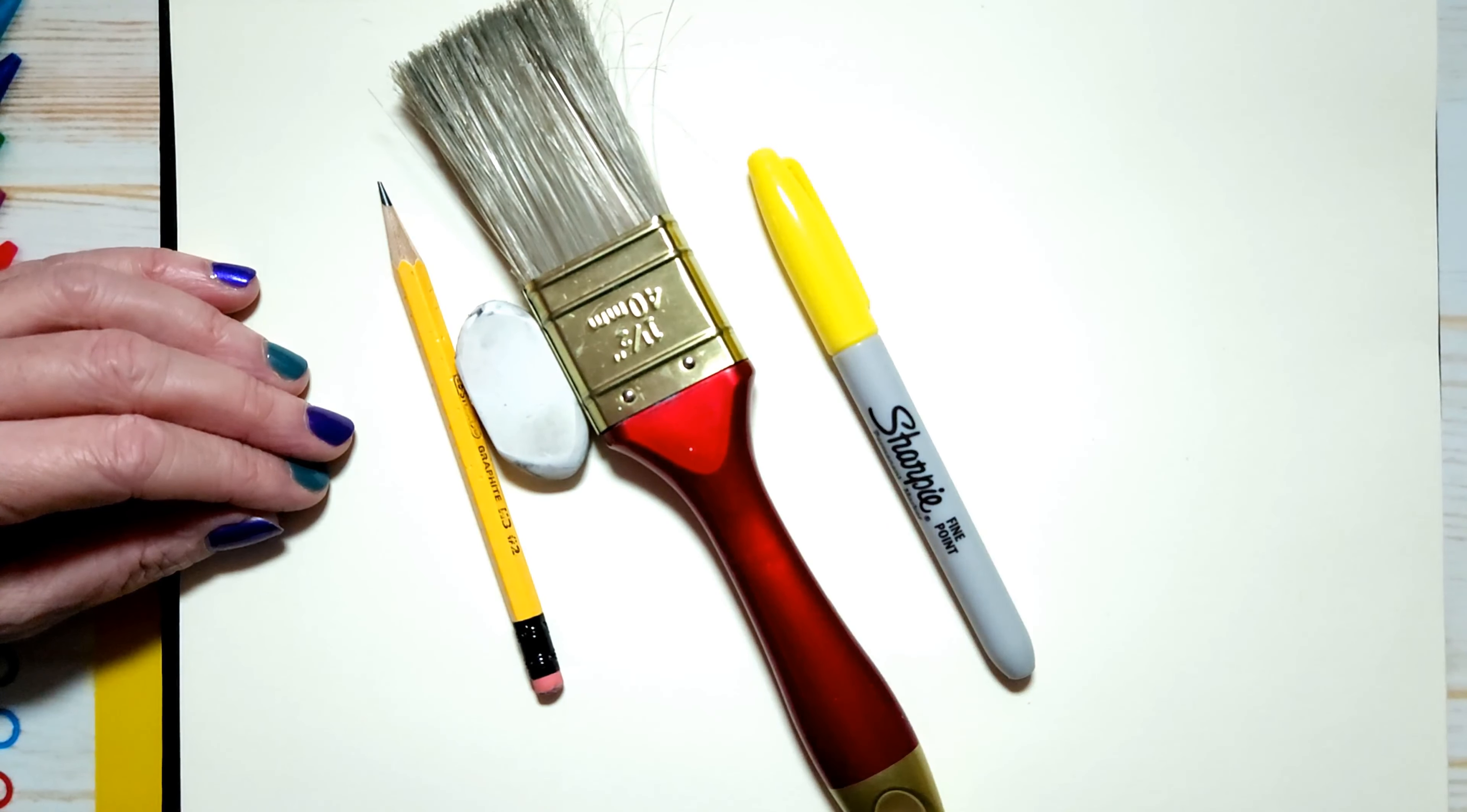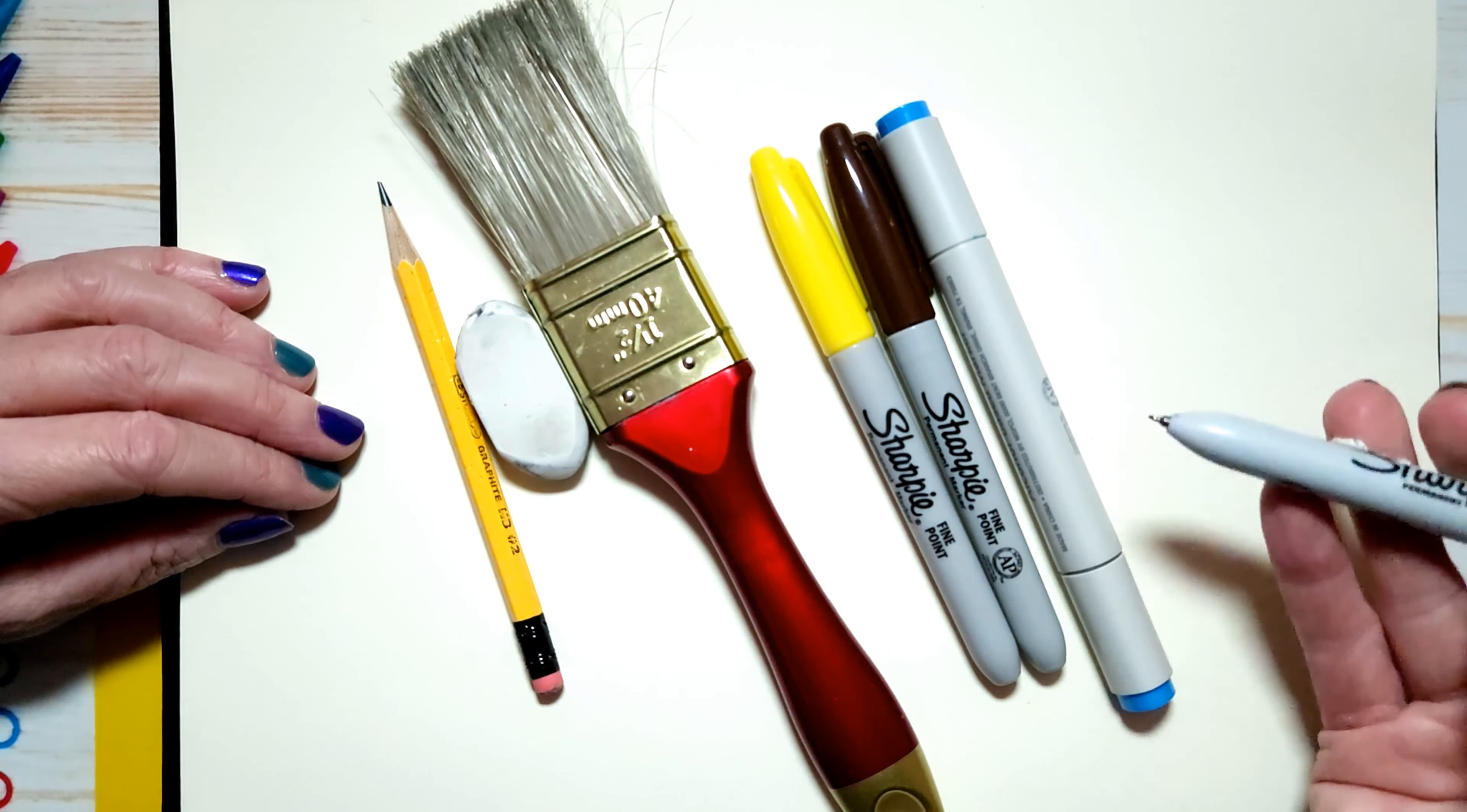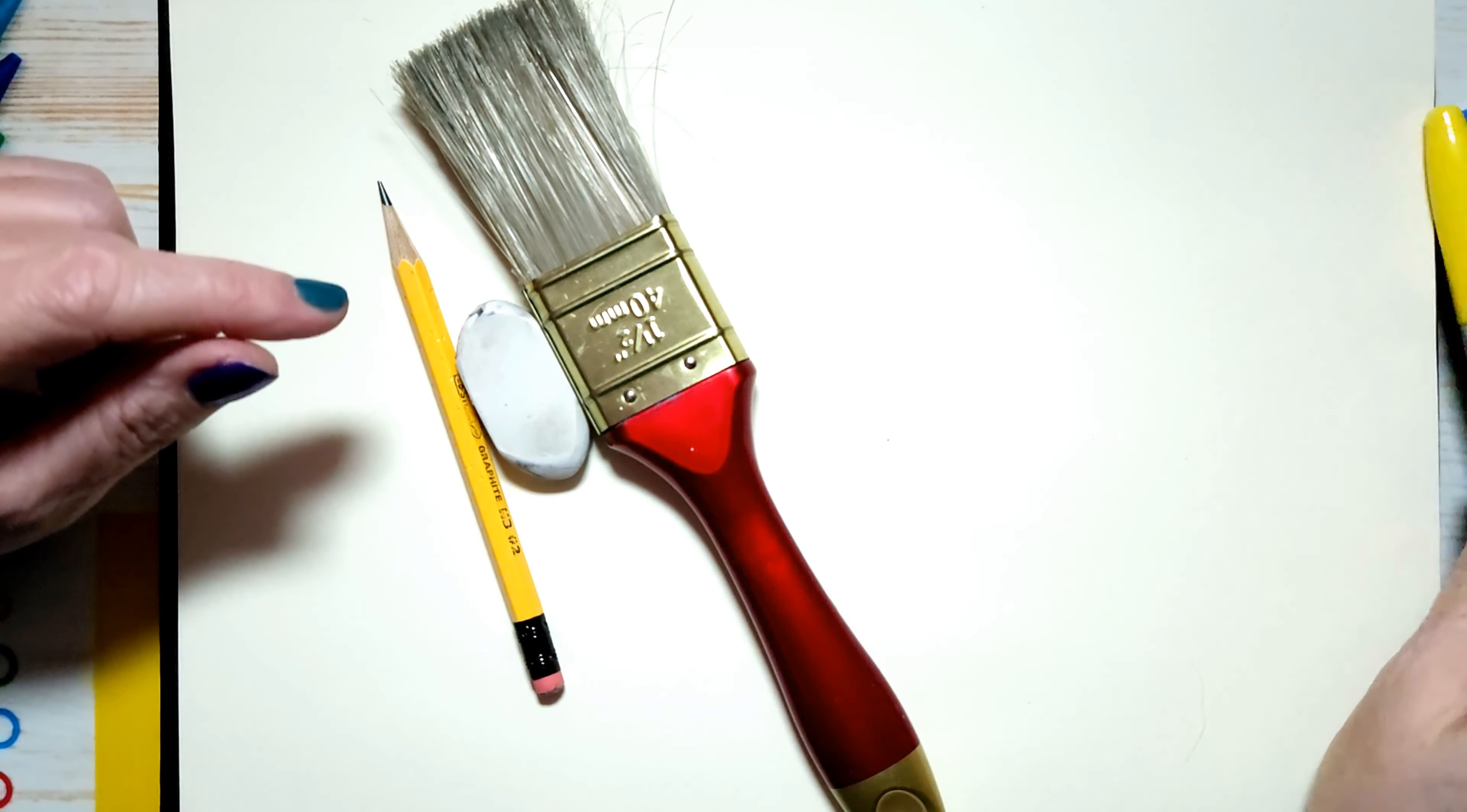For color today we're using markers. I've got yellow, brown and a nice blue color for the eggs. I also have a black Sharpie but it's a fine tip, not a thick tipped marker.